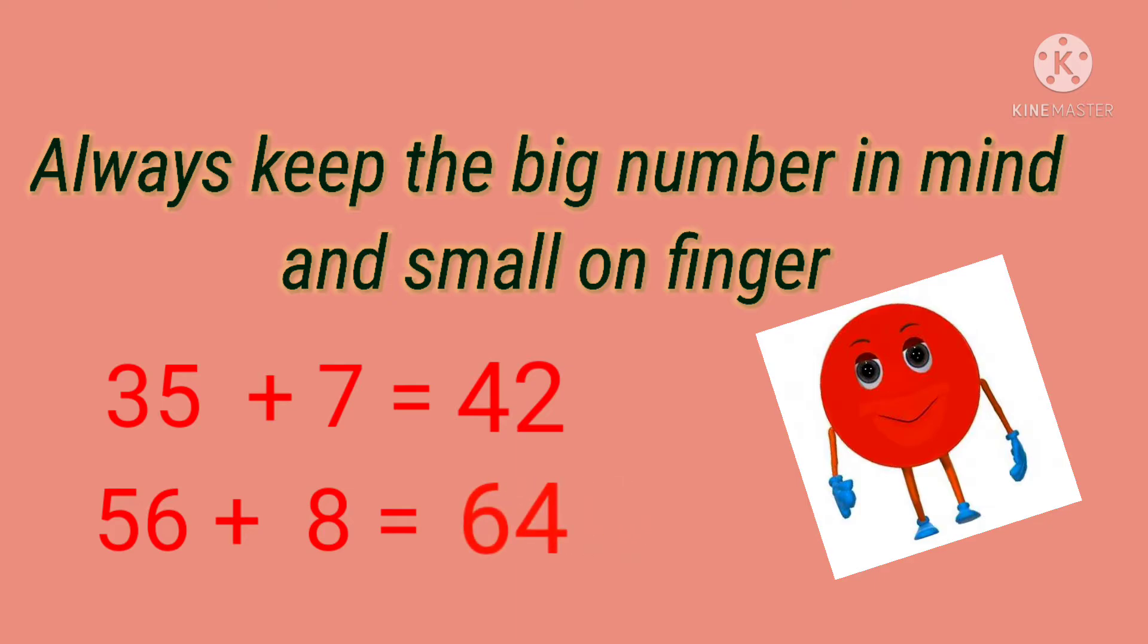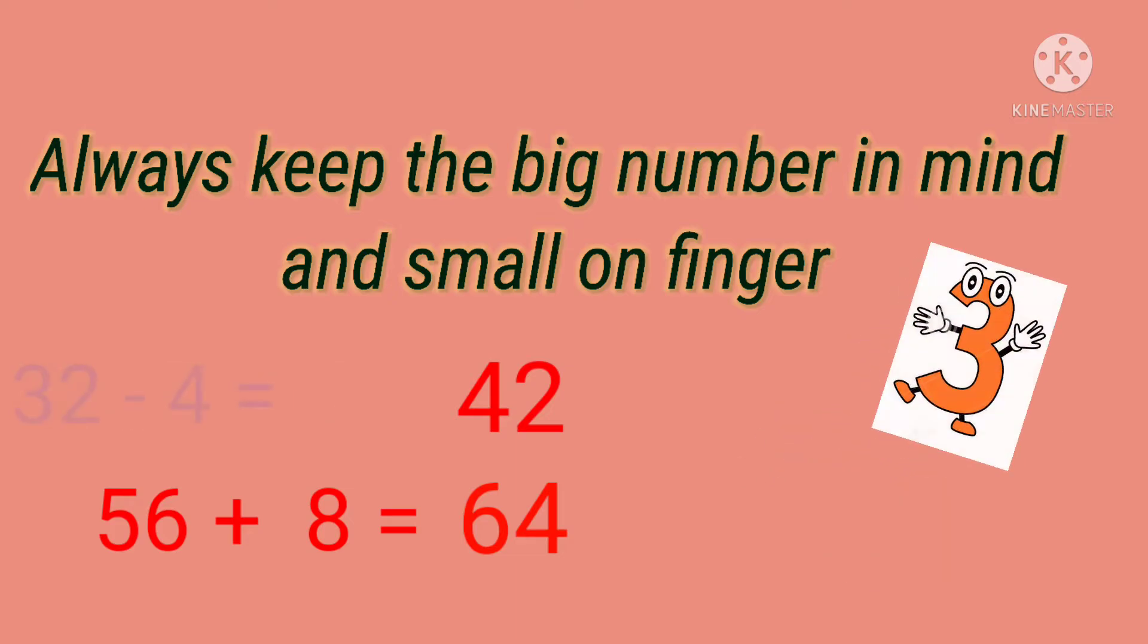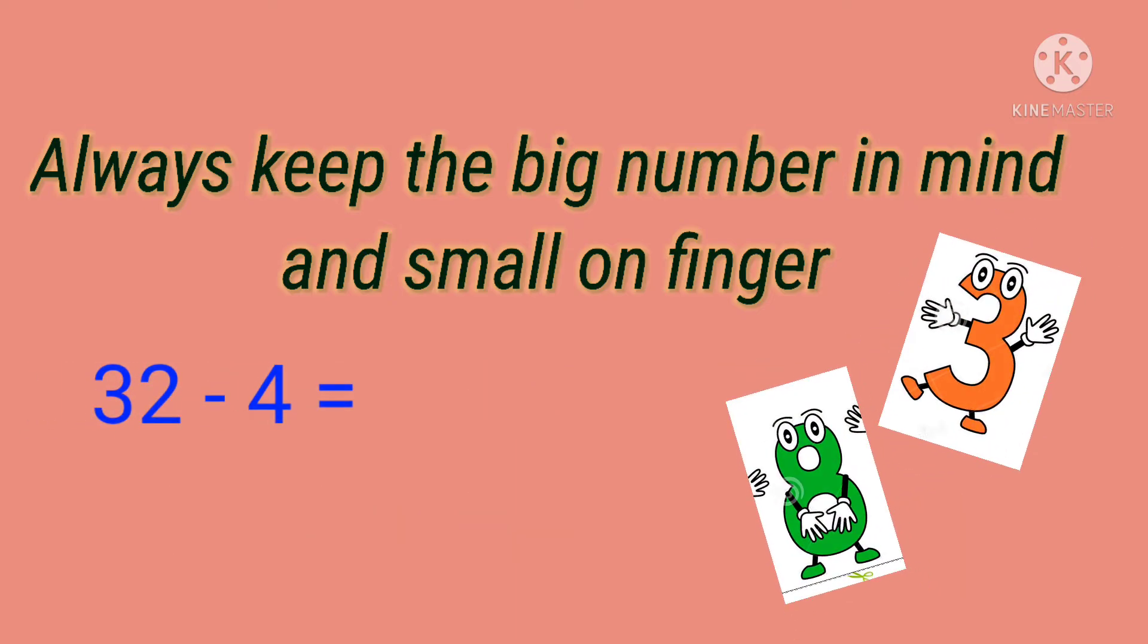Now we will see two examples of subtraction. 32 minus 4. Again, keep 32 in mind, open four fingers, and here we will count backwards: 31, 30, 29, and 28. So the answer here is 28. One more example: 95 minus 9. Again, 95 in mind, 9 on fingers, and when we count backward we will get 86.